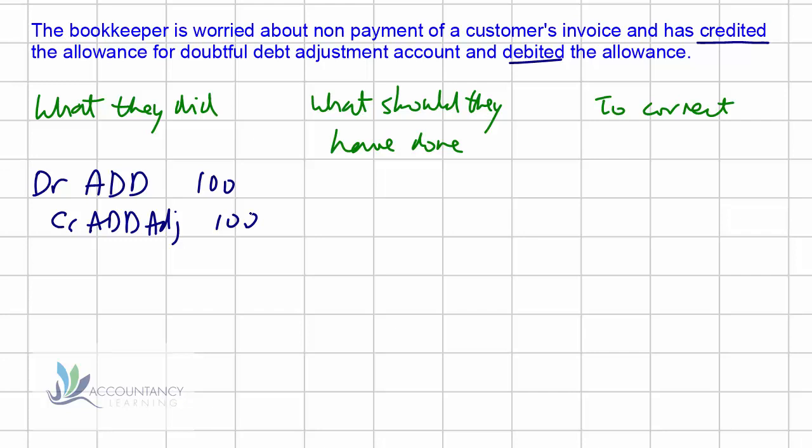What should they have done? If we're worried about non-payment of a customer invoice, we need to recognise an expense and create an allowance. The allowance should be a credit because it offsets the receivables balance which is a debit. Because we're recognising an expense, the adjustment account needs to be a debit. So they should have debited the allowance for doubtful debt adjustment account with 100 and credited the allowance itself with 100.